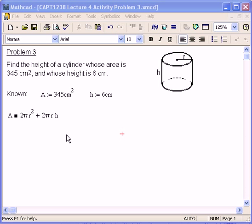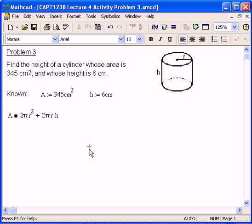In this case, again, we have a cylinder. The area, again, is 345 square centimeters. But this time we know the height and we want to find the radius. See, before we knew the radius, we wanted to get the height. Now we know the height, we want to know the radius. It looks like the same kind of problem. But look at this, this is a little different.